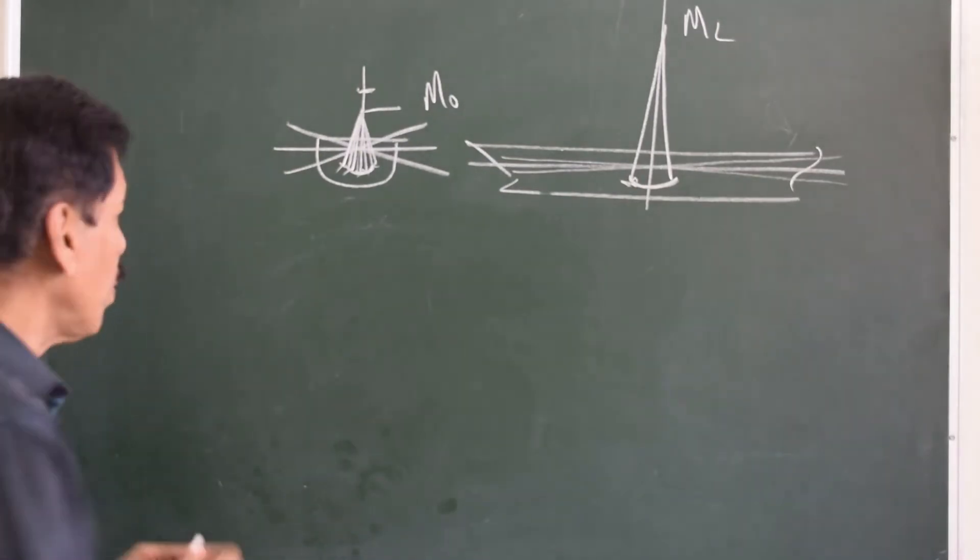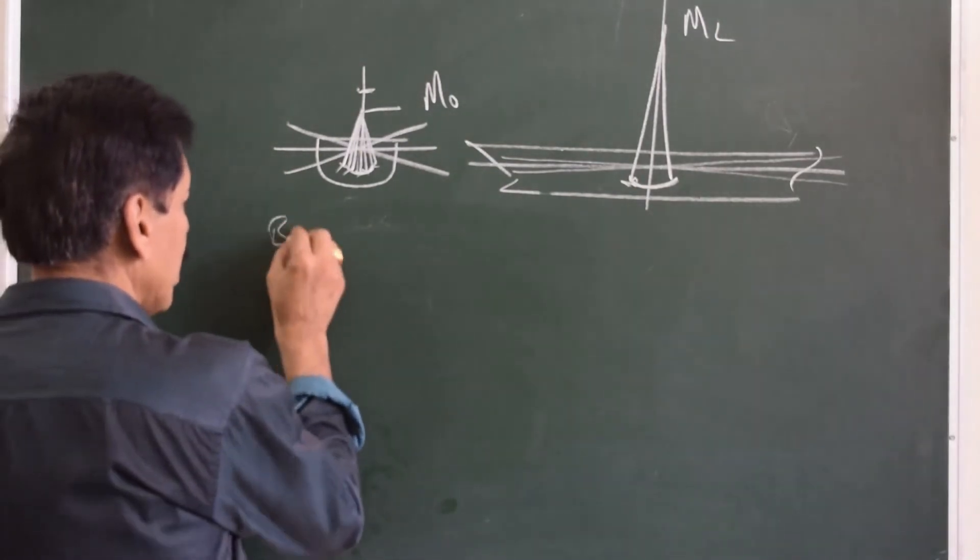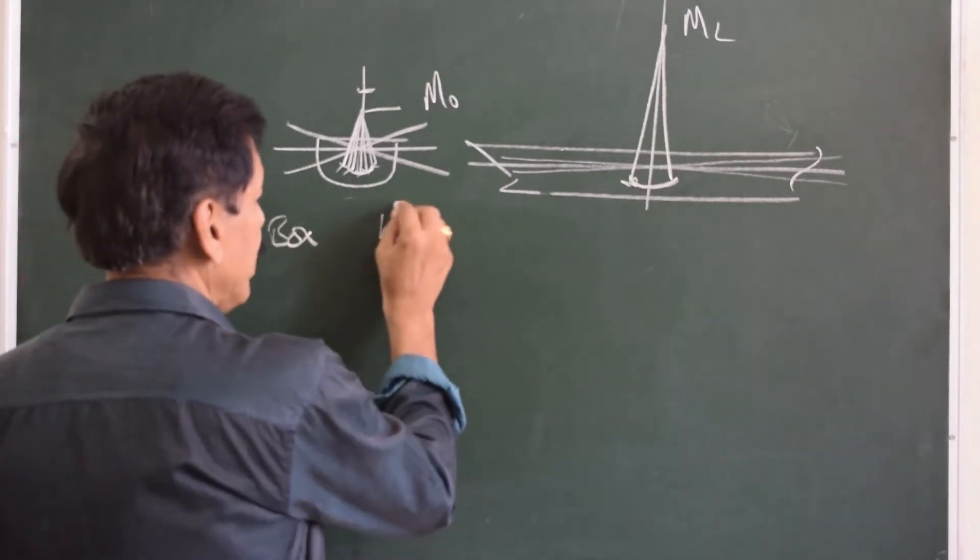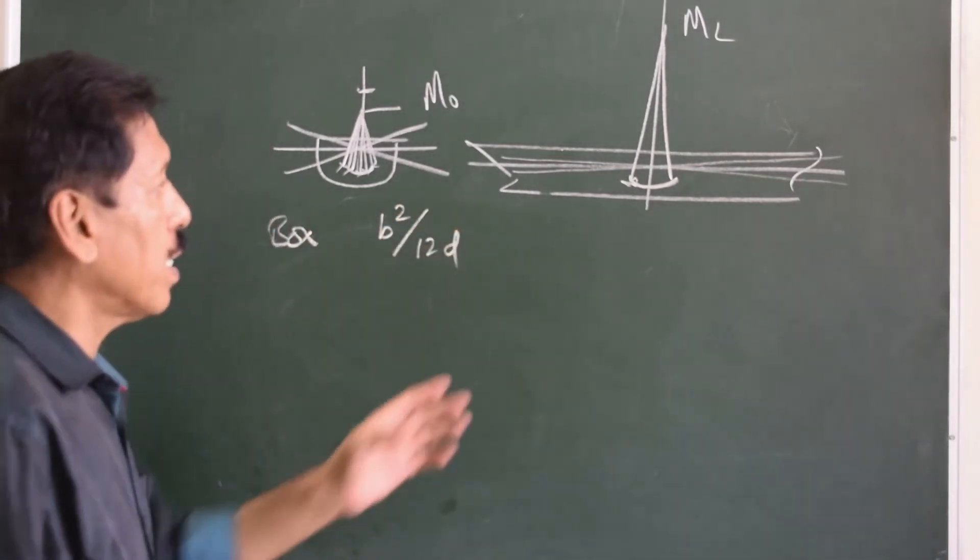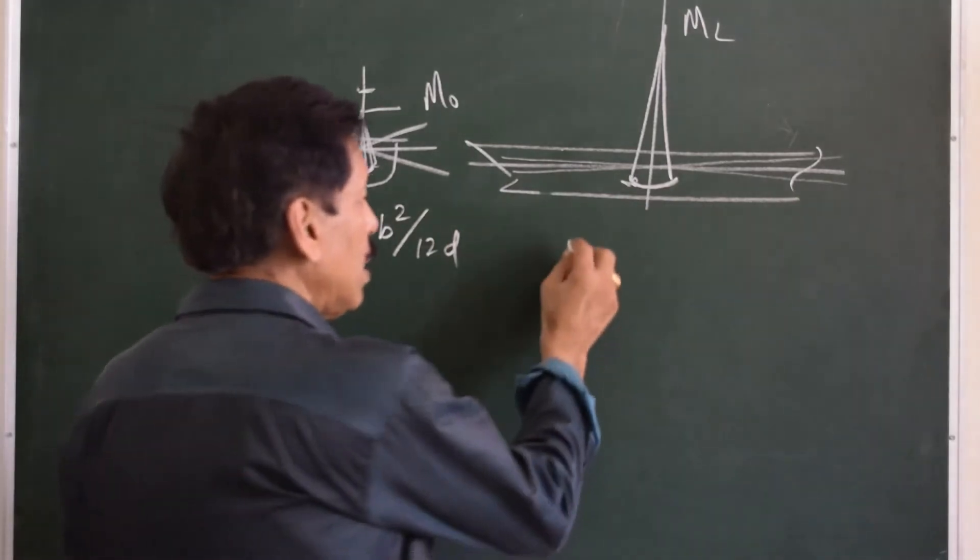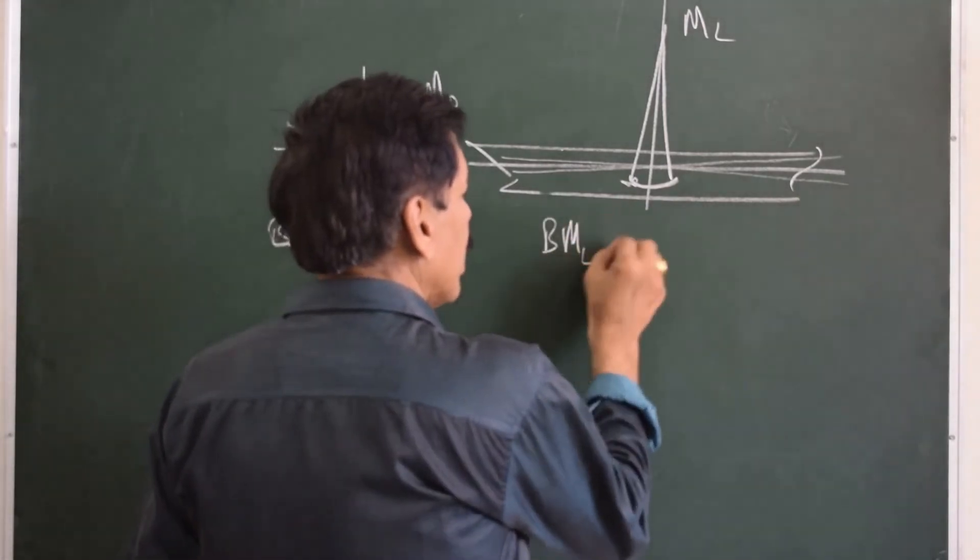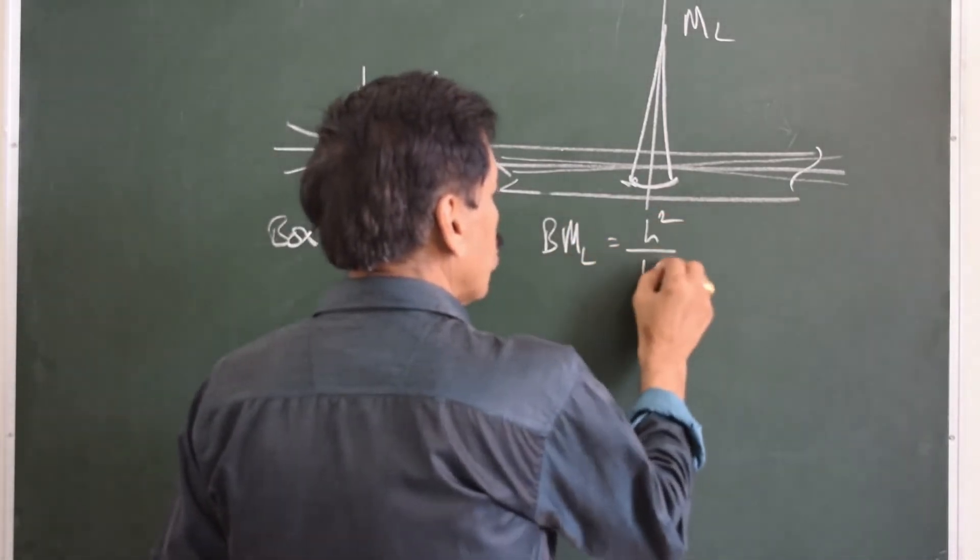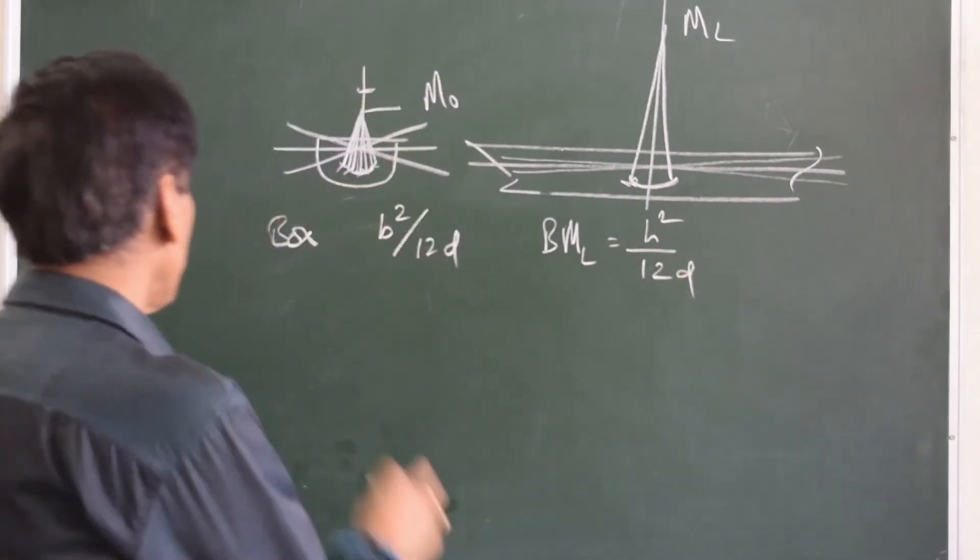Now the formula of BM for the box vessel is B squared upon 12D. And if you want to find out the BML, BML is L squared upon 12D. This is for the box vessel.